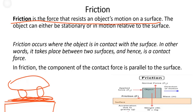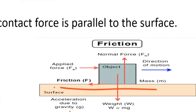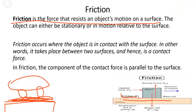Now let's look at this image. This is the surface of the floor. The friction applied and the mass — this is the mass of the object. The force applied goes in this direction.